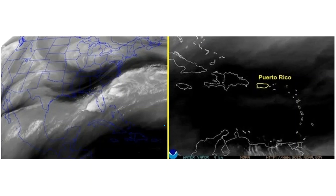It's important to remember that water vapor imagery very rarely gives us insights about surface or near-surface moisture. For example, check out this water vapor image of North America and the Western Atlantic Ocean in the image on the left, and focus in on the Caribbean Sea.